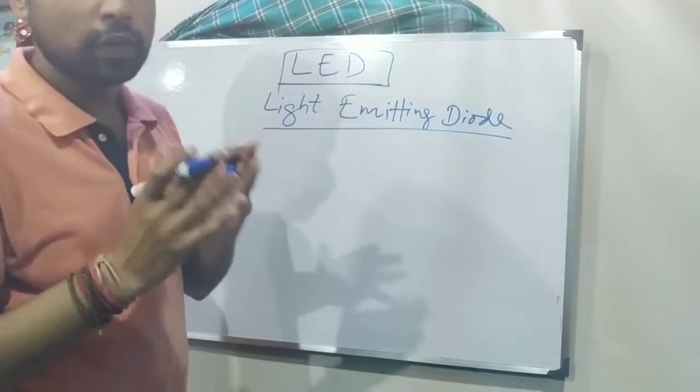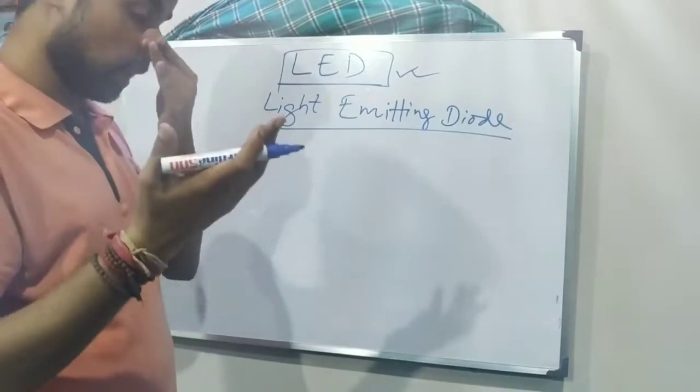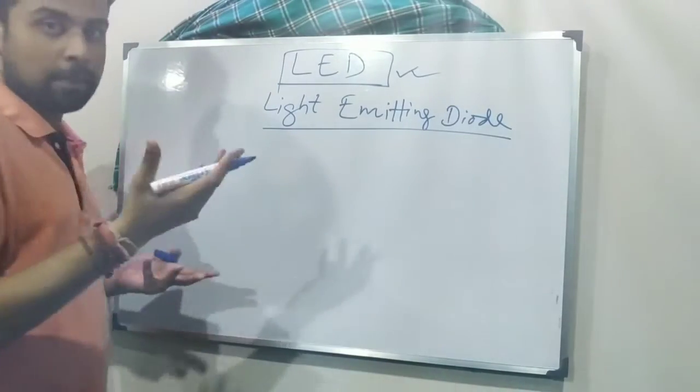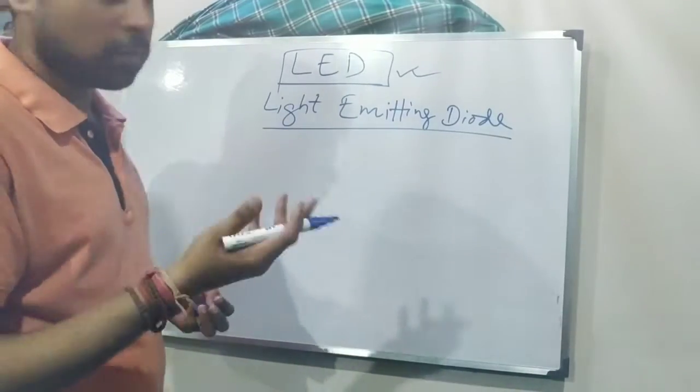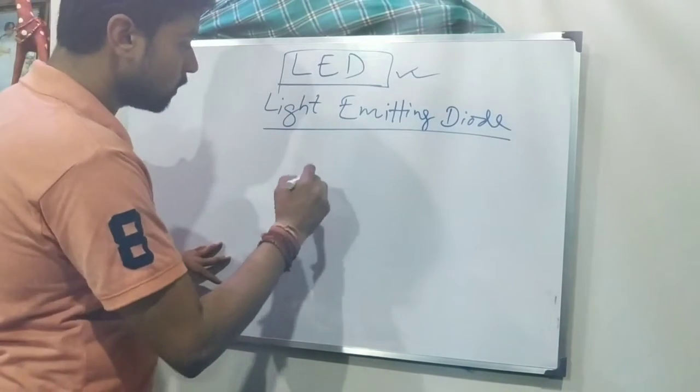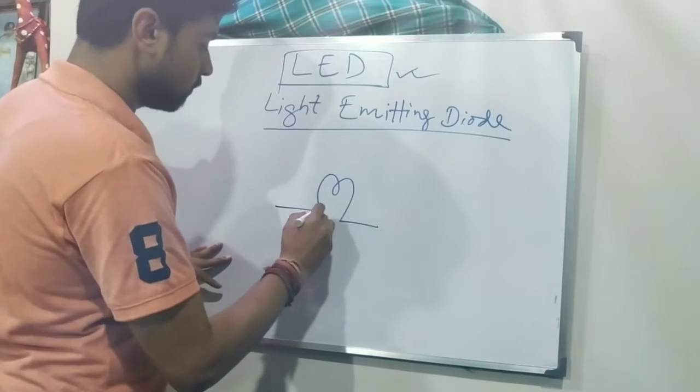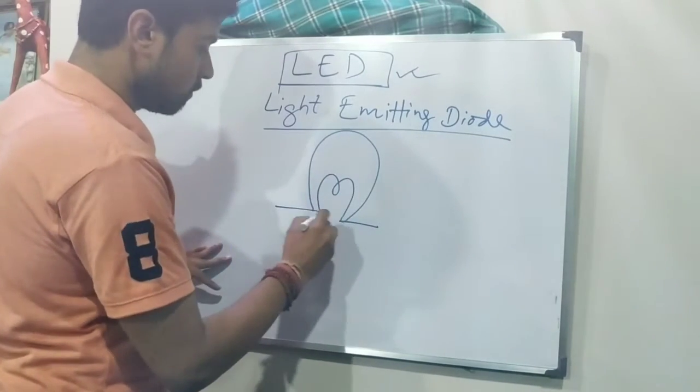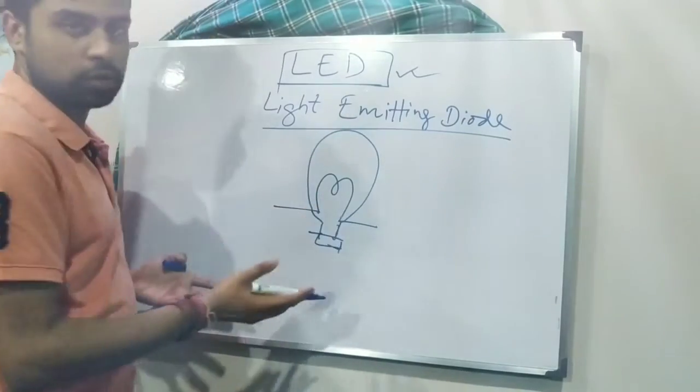Now the first question arises, why do we need an LED when we already have several types of lamps? It involves the basic fluorescent bulb. The construction is very simple, right? This is how a bulb, typical bulb looks like.